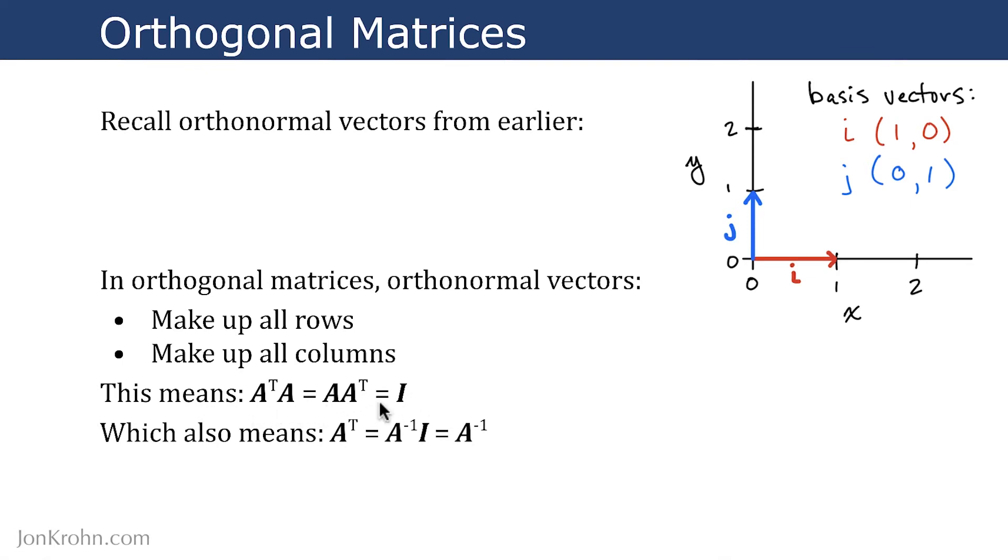Because of this property, if you take A A transpose equals the identity matrix, you could multiply both sides of the equation by the inverse of A. And that would leave us with A transpose is equal to the inverse of A I, because A inverse and A would cancel out on the left side of the equation. When we do that, we use A inverse, and so A transpose is equal to A inverse times the identity matrix.